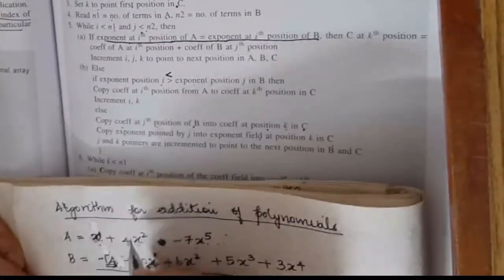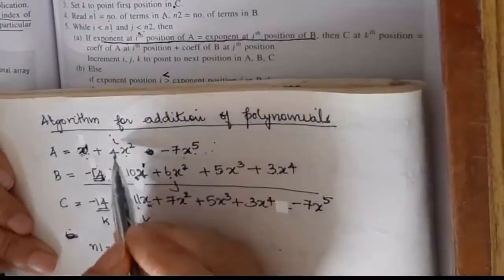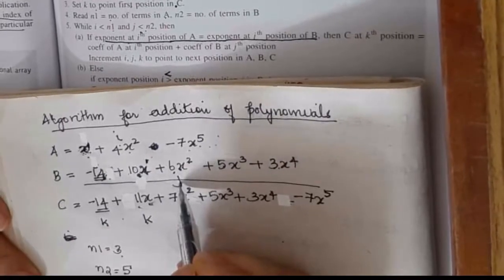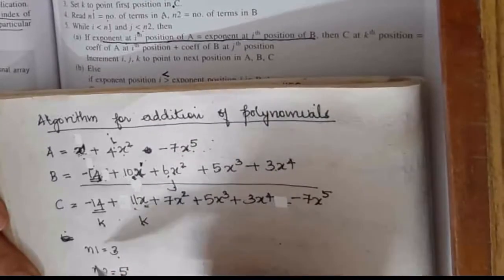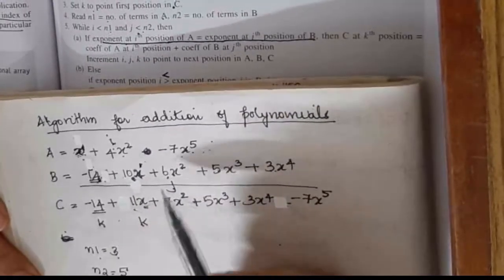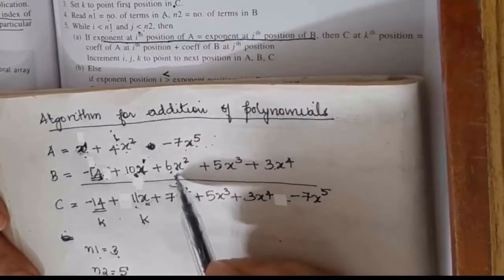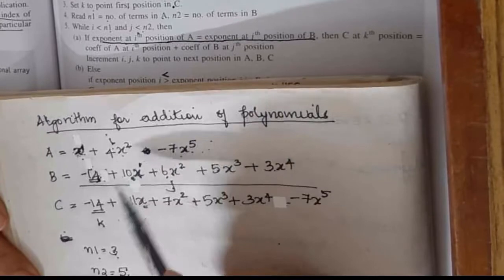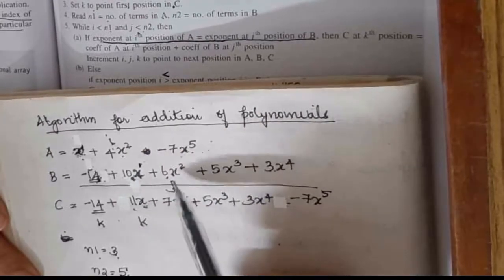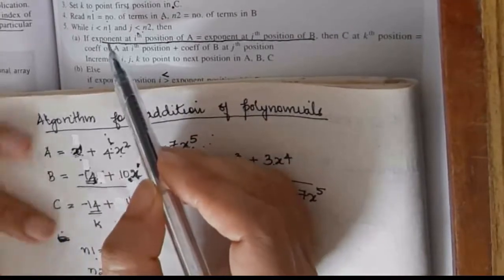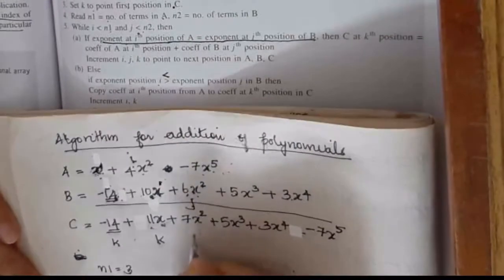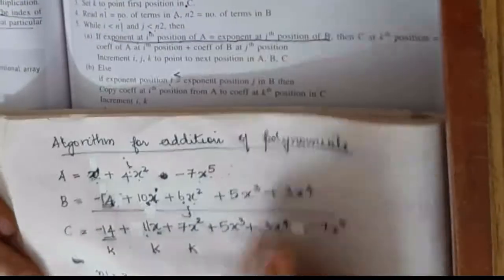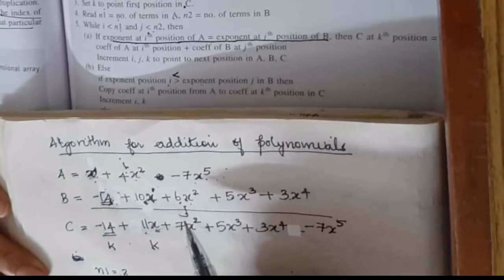Now i will point to the next term and j will point to the next term. i becomes the second term, which is index 2, less than n1 which is 3. n2 is now index 3, less than 5. The exponents are the same again, so we add the coefficients and put the result into k. We get 4 plus 6 equals 10, giving 10x squared. Then i, j, and k are incremented again.